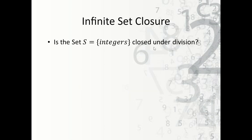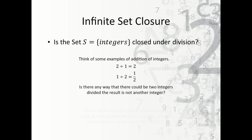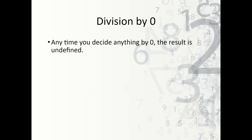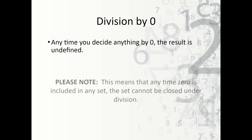What about the set of integers closed under division? When we divide 1 by 2, we get 1/2, which is not an integer — it's a rational number. Also, since zero is included in the integers, dividing by zero is always undefined. Therefore, the set of integers is not closed under division.